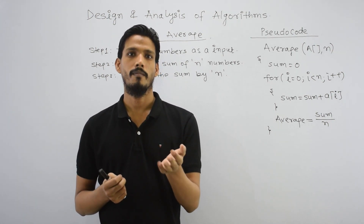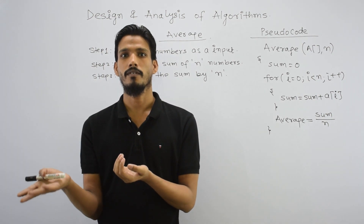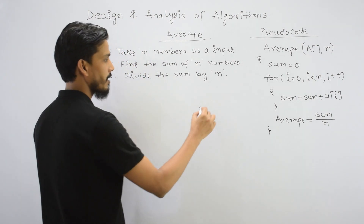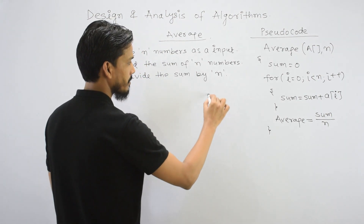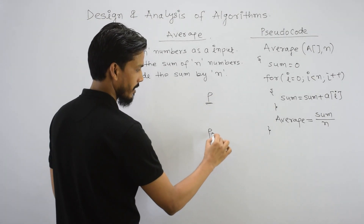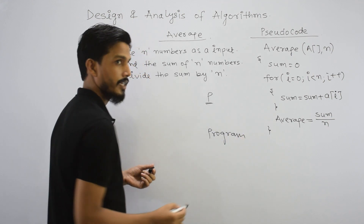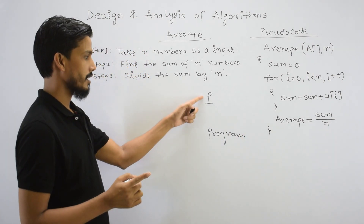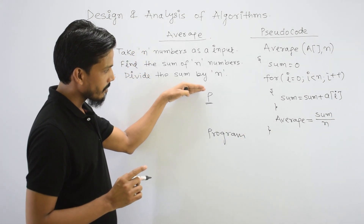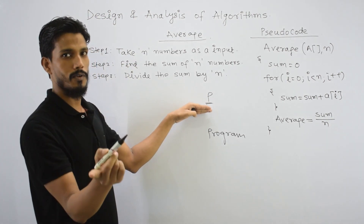If we have to solve any problem, we simply use an algorithm. For example, in computer science, if we solve any problem, we write a corresponding program. But first we solve the problem using an algorithm, and then we convert it into a program.